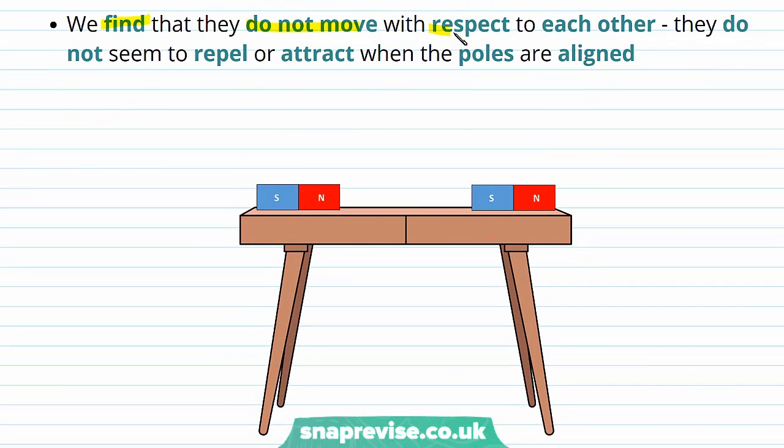We find that they do not move with respect to each other. They do not seem to repel or attract when the poles are aligned. So we would expect these magnets to attract each other and therefore to move towards one another, but in fact they remain stationary.